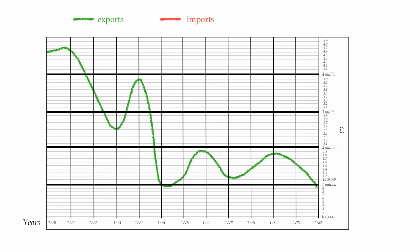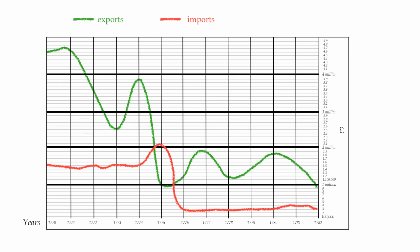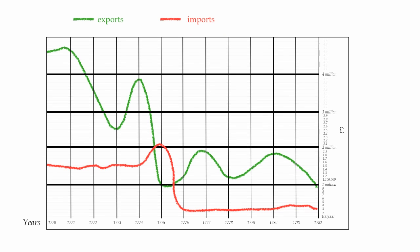Now I'm going to plot imports from North America, plotting the same points Playfair used, this time in red. I'll fit a nice smooth curve to all those dots and fade them out. Then I'll fade away the sub grid lines and their associated values — notice the chart looks a lot cleaner and easier to understand.